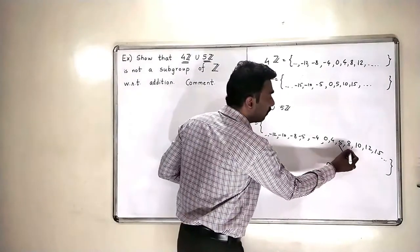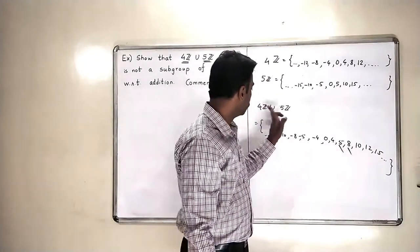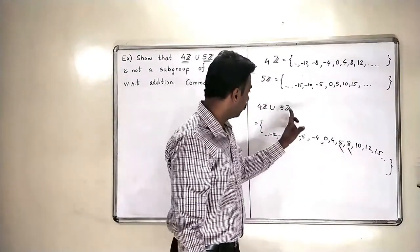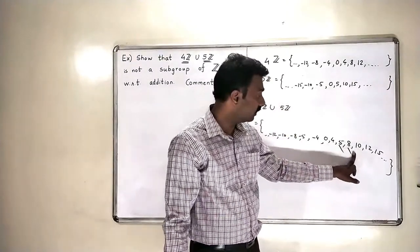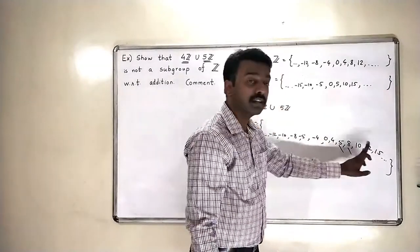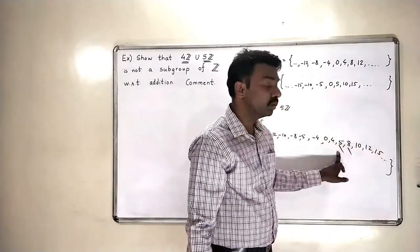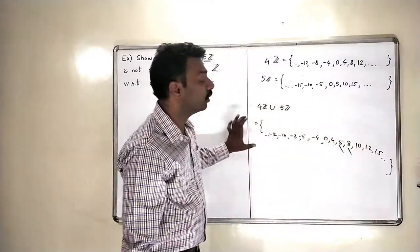So suppose I pick 5 and 8. So I am taking 5 from this set. I am taking 8 is also from that set. What is the addition of 5 and 8? The addition of 5 and 8 is 13. Is there 13 element in this set? No. This means that the closure will not be satisfied.